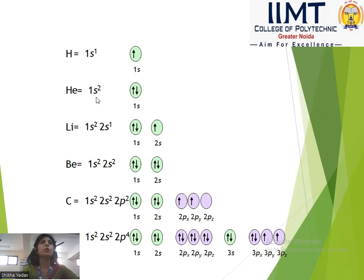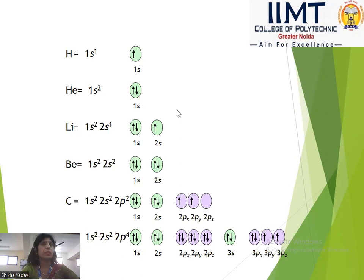Helium has atomic number 2, so its configuration is 1s². One electron spins clockwise and the other anticlockwise. Next is lithium with atomic number 3: 1s², 2s¹. In 1s we have 2 electrons and in 2s we have 1 electron.